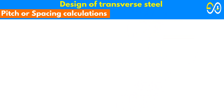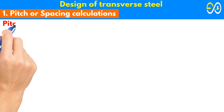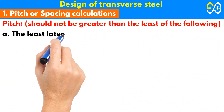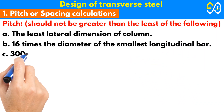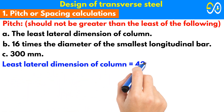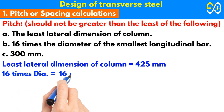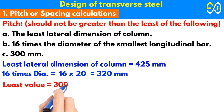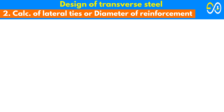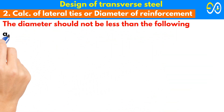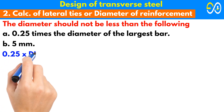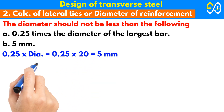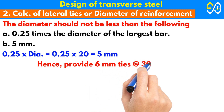Design of transverse steel. Pitch or spacing: pitch should not be greater than the least of the following: (a) least lateral dimension of column equals 425 mm, (b) 16 times the diameter of the smallest longitudinal bar equals 16 times 20 equals 320 mm, (c) 300 mm. Least value equals 300 mm. Diameter of lateral ties should not be less than: (a) 0.25 times the diameter of the largest bar equals 0.25 times 20 equals 5 mm, or (b) 5 mm. Hence, provide 6 mm ties at 300 mm center to center. Provide 8 bars of 4-20 mm with 6 mm ties at 300 mm c/c.